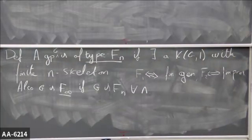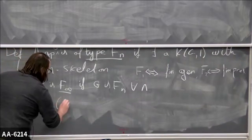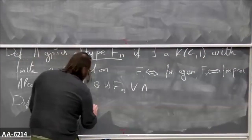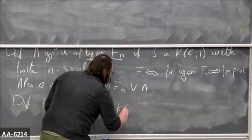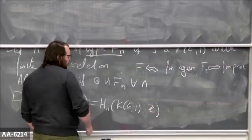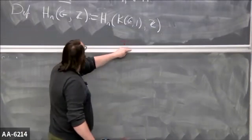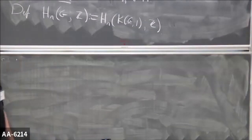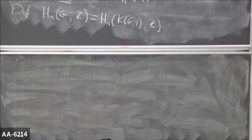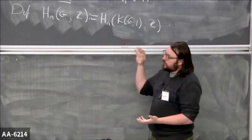Now I have a space uniquely associated to a group, so a reasonable definition: the homology of a group G with ℤ coefficients is defined to be the homology of a classifying space with ℤ coefficients. That's a perfectly feasible definition. There's always a classifying space — you can build one very naively: take a single vertex, attach a single edge for each element of your group, attach a two-cell for every product g₁·g₂ = g₃ in your group, and so on.